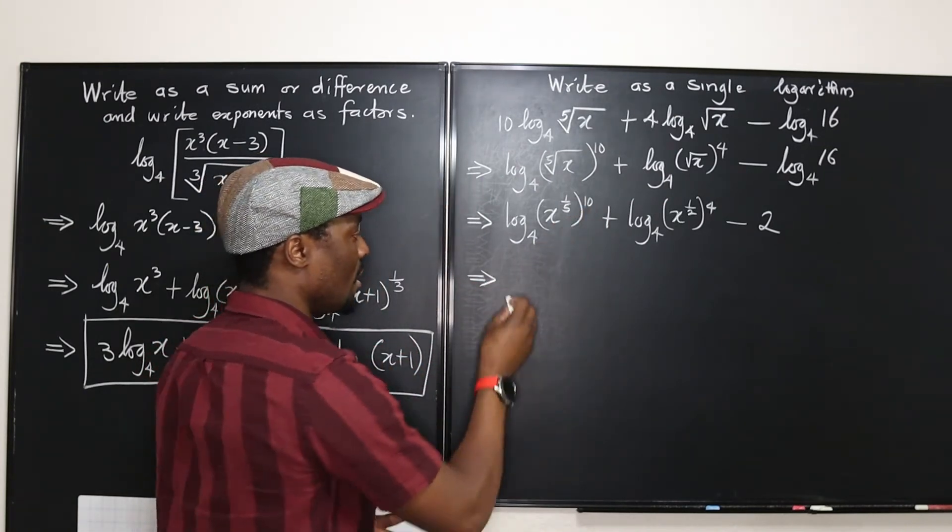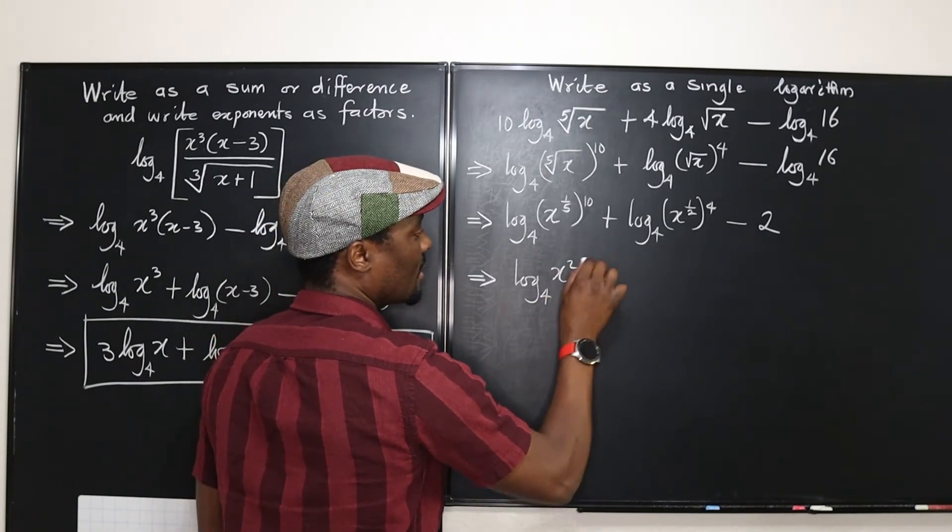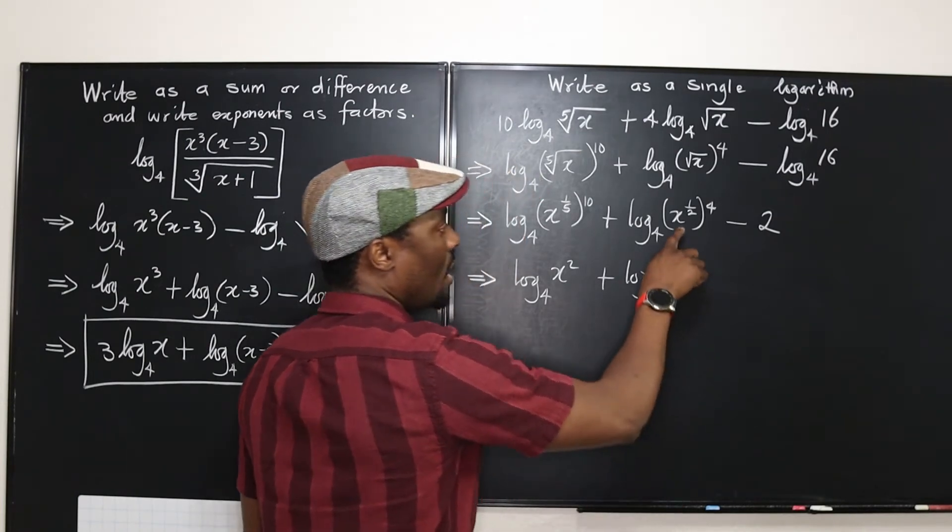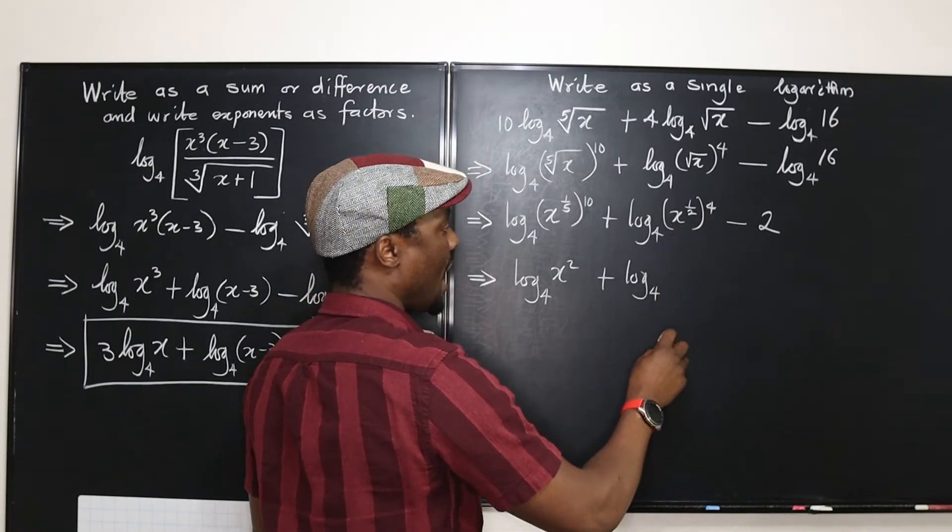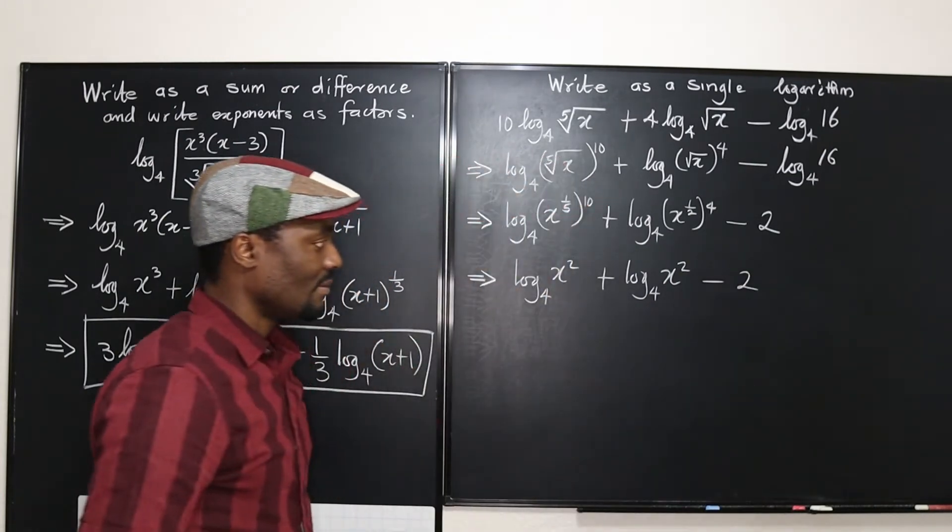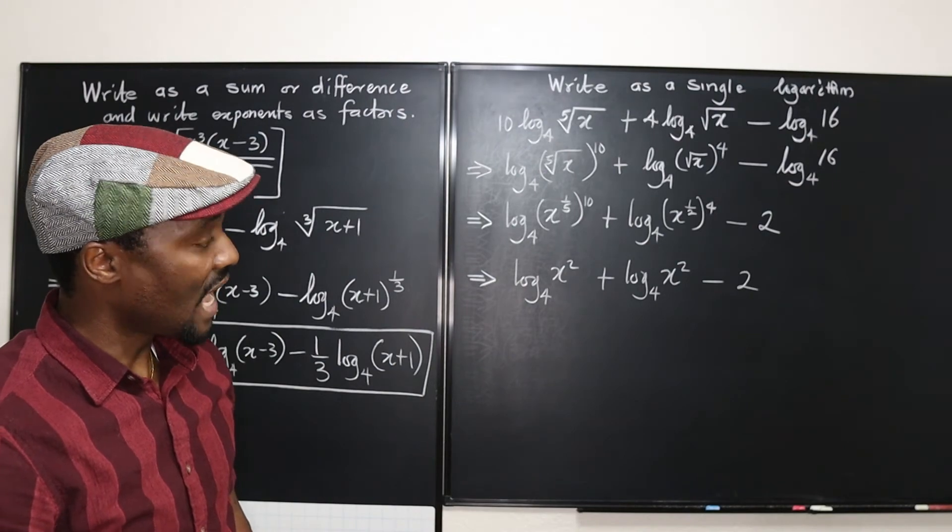So, now, what do we do here? I'm going to write this as an exponent. So, this is going to be log to base 4 of x to the 1 over 5 raised to power 10 plus log to base 4 of x to 1 half. That's the square root of x raised to power 4 minus, it's just awkward for me to keep writing this. I'm just supposed to write 2. You know what? I'm just going to write 2. Because that's the answer to that. And then, we move on. Now, 1 half of 10 is going to be 2. So, you have log to base 4 of x squared plus log to base 4. What is 1 half of 4? That's going to be x squared also minus 2.